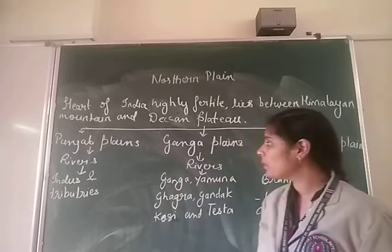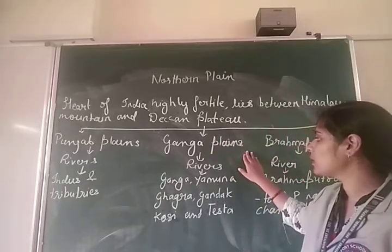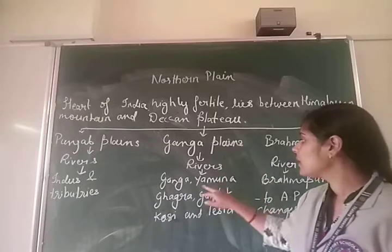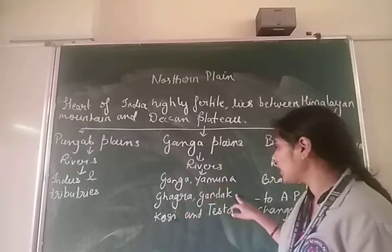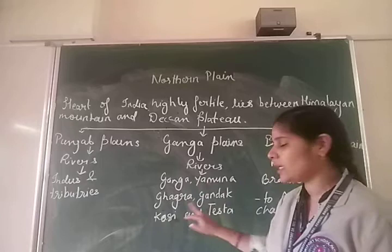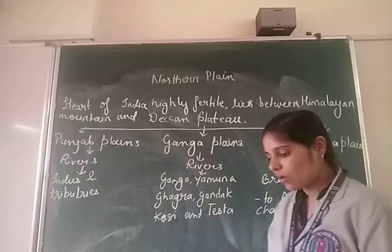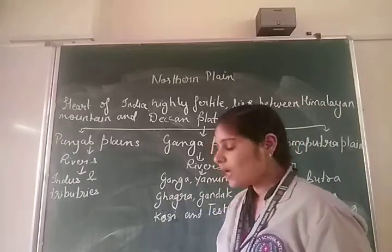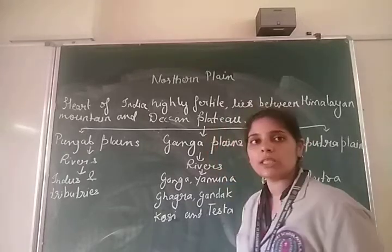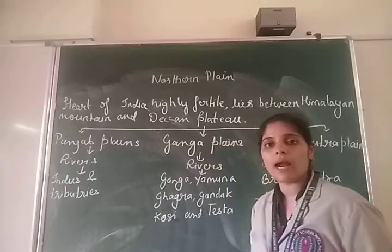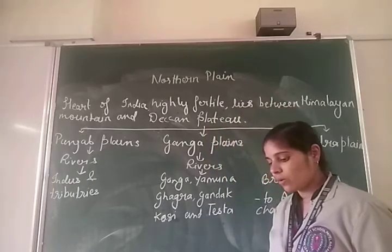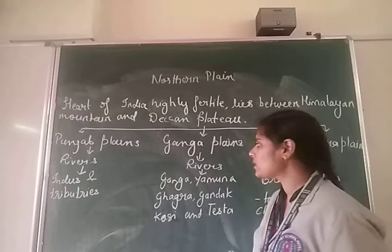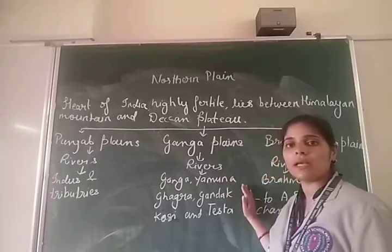The second one is the Ganga Plain. Coming to the Ganga Plain, the rivers here are Ganga, Yamuna, Ghaghra, Gandak, Kosi, and Tista. These lands are also very fertile, and there is flourishing trade and industry. This is the most populous plain of India.